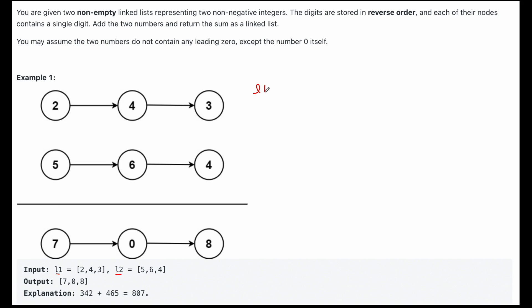What we want to do is we want to add the values of whatever the current node is, so we'll say l1.val plus l2.val plus whatever our carry is, because we have to account for the fact that we may have had a value over 10 for the previous sum.